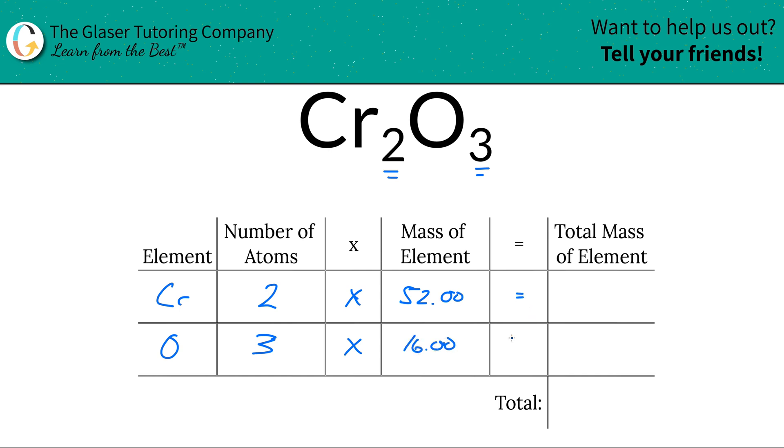Then to find the total mass of each element in the compound, you just got to simply multiply the row. Look at how easy that is. So 52 times 2 is 104 - by gosh by golly I hope I'm right with that - and 16 times 3 is 48.